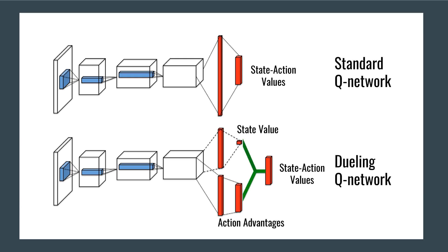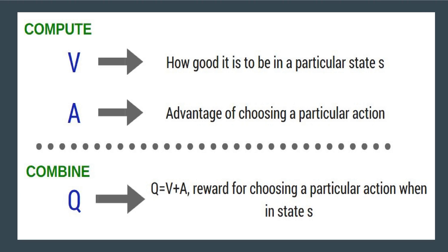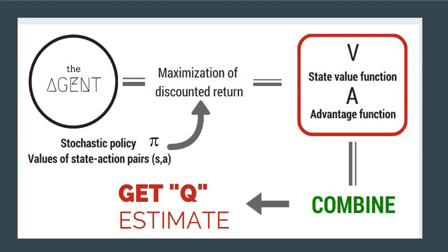Instead of incorporating existing neural network designs into RL, this paper introduces a neural network explicitly designed for this. Let's start with a few basic definitions: V, the goodness of a state, and A, the advantage from an action — computed and combined, these give Q, the reward for an action. The goal of the new neural network the authors propose is to estimate Q by separately estimating V and A.